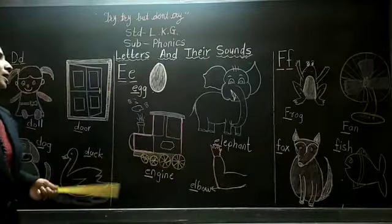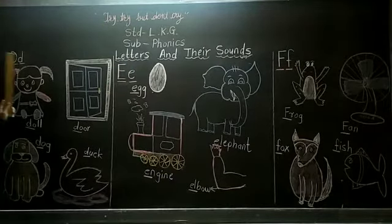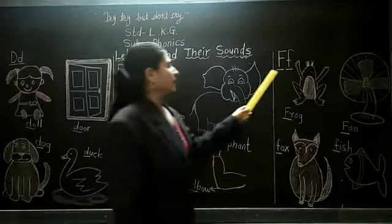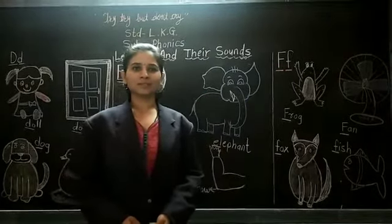Once again, repeat the letters with their meaning. Letter D sounds as duh. Letter E sounds as eh. And the letter F sounds as fuh.